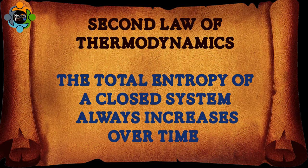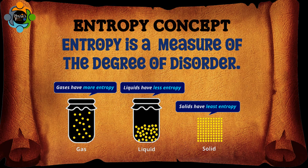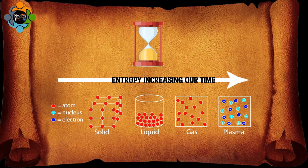Let's start by understanding the basic concept of the second law of thermodynamics. Simply put, this law states that the total entropy of a closed system always increases over time. Entropy is a measure of quality of energy, in the sense that the lower the entropy the higher the quality. Entropy is also a measure of the degree of disorder, randomness, or chaos in the system.